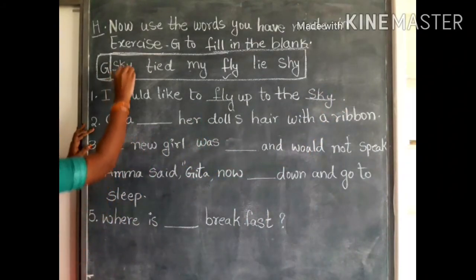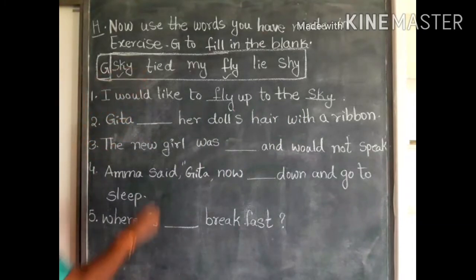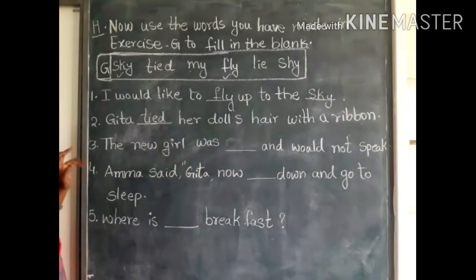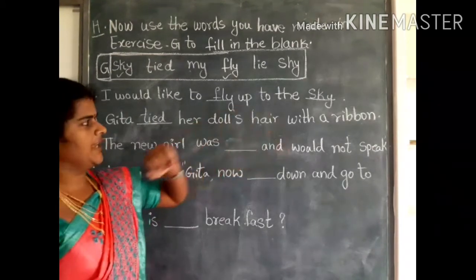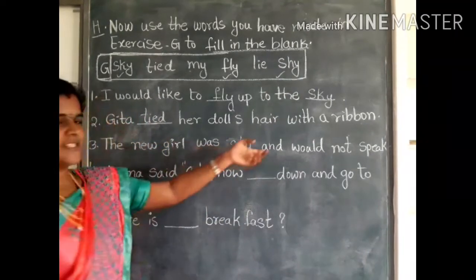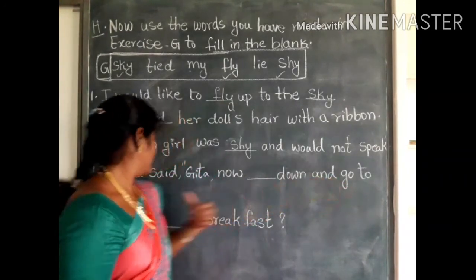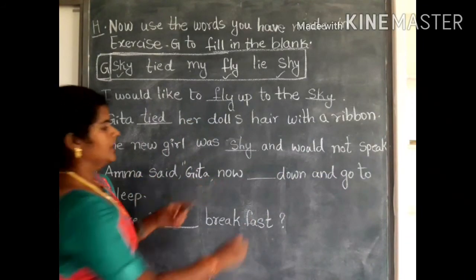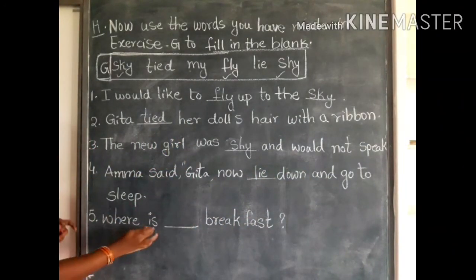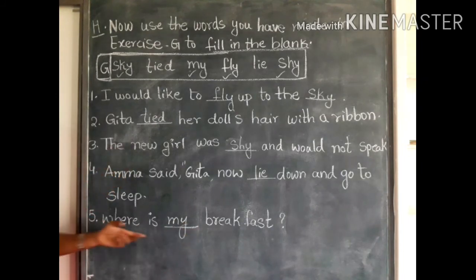Second sentence: Geetha tied her doll's hair with a ribbon. Third sentence: The new girl was shy and would not speak. Fourth sentence: Amma said, 'Geetha, now lie down and go to sleep.' Fifth sentence: Where is my breakfast?